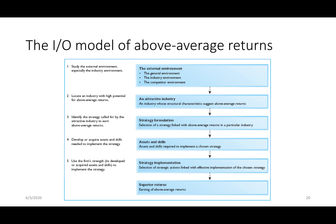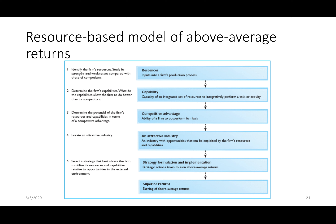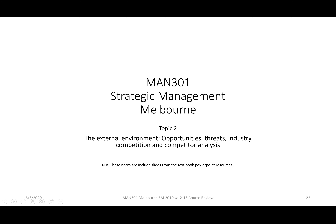We discussed the IO model and the resource-based model, but I'm just going to mention them quickly as part of our review. In topic two, we spent a lot of time looking at the external environment — the opportunities and threats that exist in the general external environment. We talked about the industry competitive environment and competitive analysis and strategic groups.